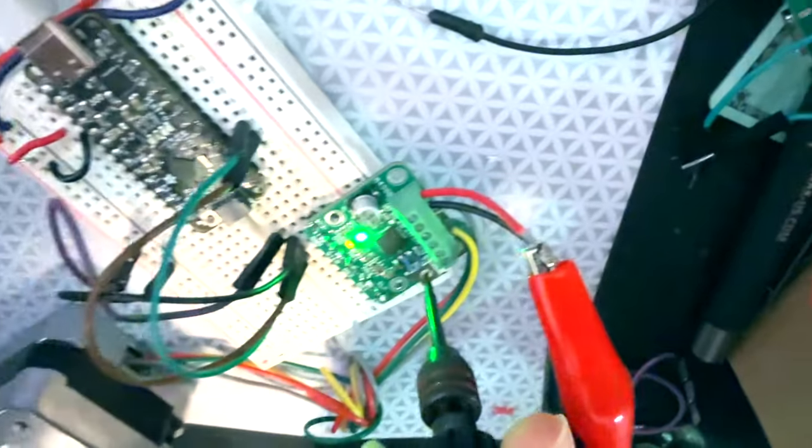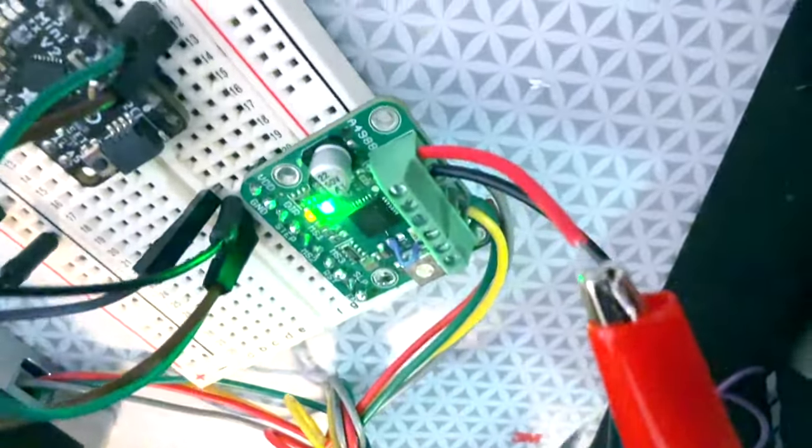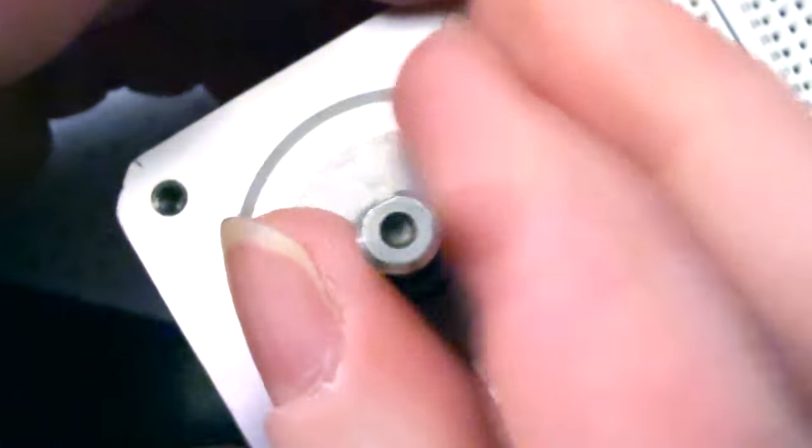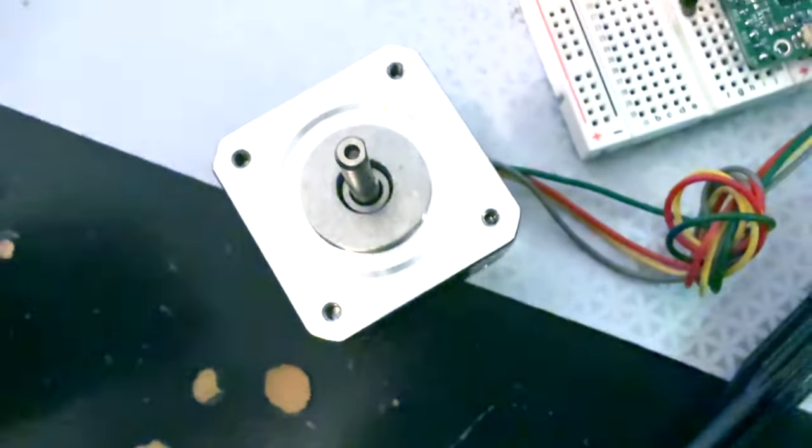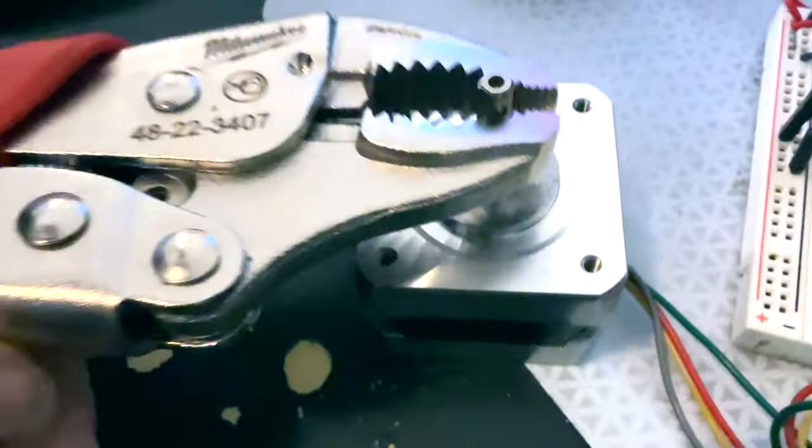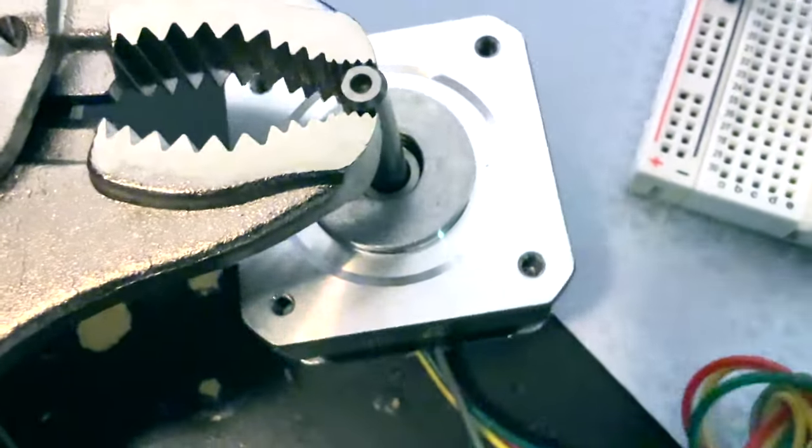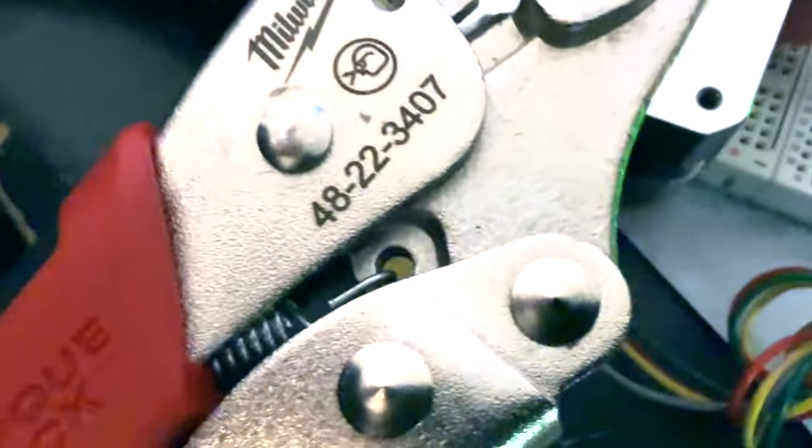And then if I twist this pot to increase the current, now I can't. Like the torque is high enough that I actually need to use a, what are these called again? Clamp? These are torque locks from Milwaukee. Torque locks.